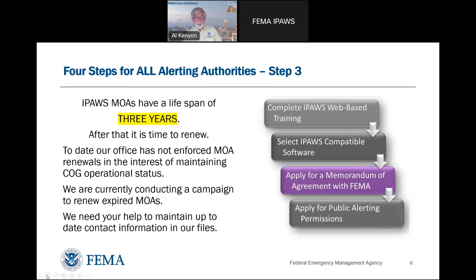IPAWS MOAs — the paperwork, or rather the electronic paperwork — have a lifespan of three years, and you have to renew. That's the next step in the process for new folks. You apply for an IPAWS MOA. We ask you for your points of contact and what alerting software you're going to use. We use that to fill out your draft IPAWS MOA, then send it out to you for local review and signature.